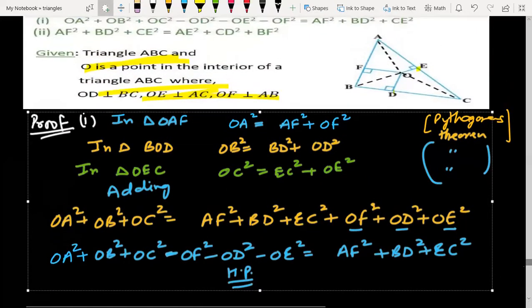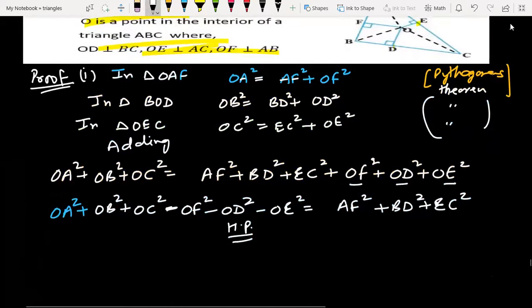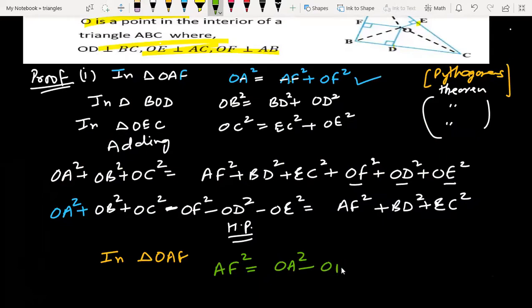Let's see what we need to do. We need AF. So in triangle OAF, what will you do in the OAF triangle? Like we have put here Pythagoras, we will remove AF's value. AF square equal to OA square minus OF square.